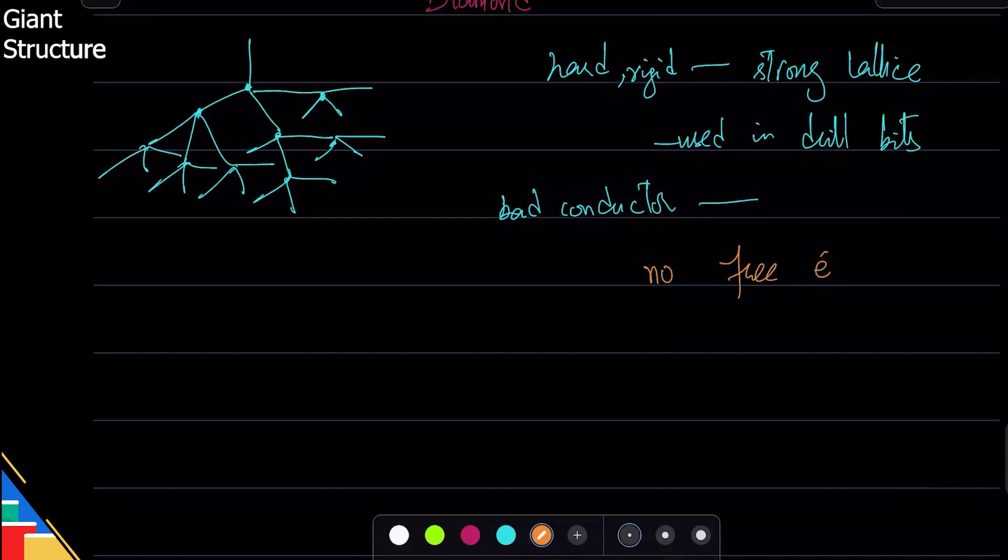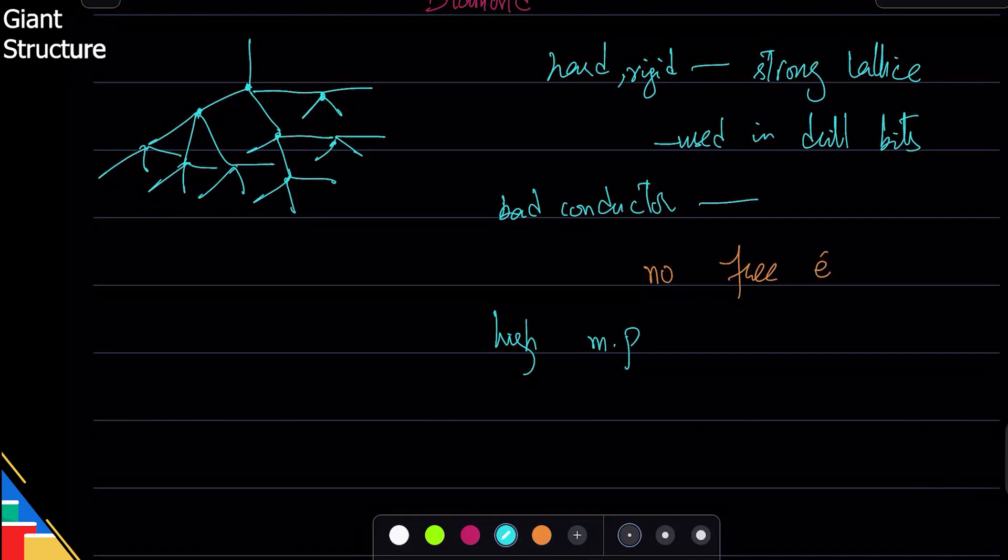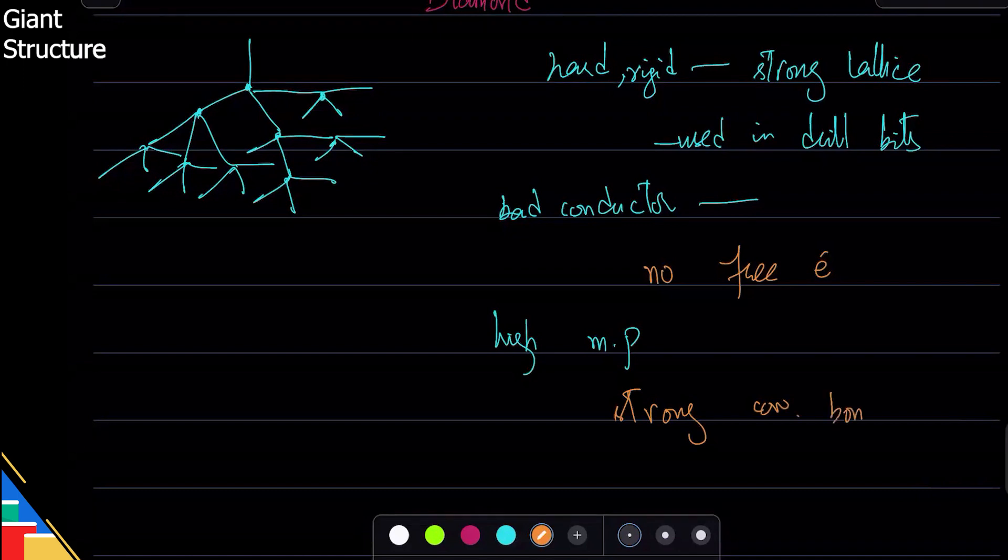Just like graphite or any other lattice structure or any other giant structure, it has high melting point and high density because of strong covalent bonds, and all of those bonds need to be broken before this thing can melt. Another thing that has the same structure as diamond is silicon dioxide.